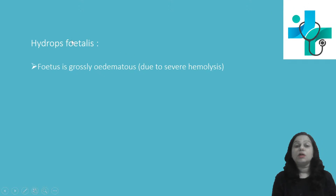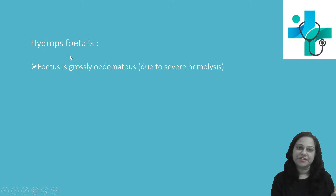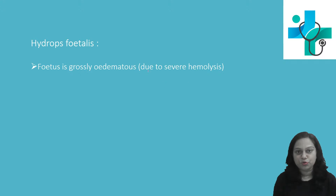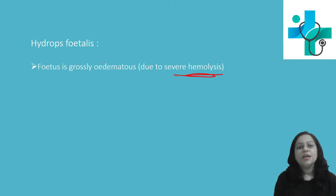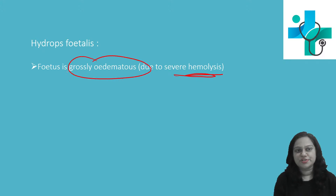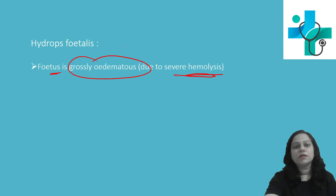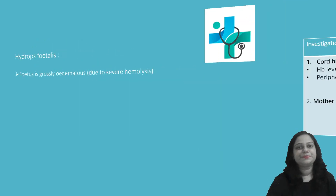The third form of hemolytic disease of the newborn is hydrops fetalis. This is an extremely severe form where there is severe hemolysis, which causes gross edematous changes in the intrauterine child and may cause intrauterine death. Intrauterine fetal death may occur.